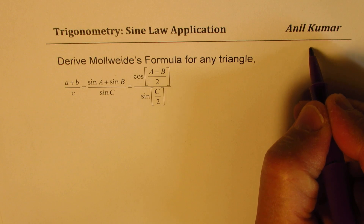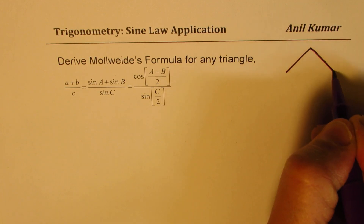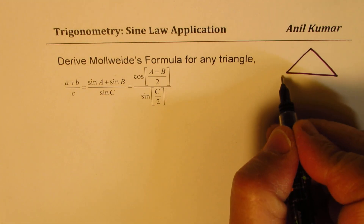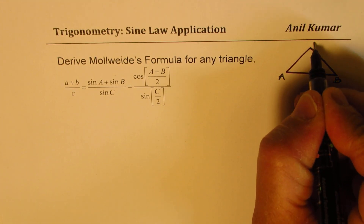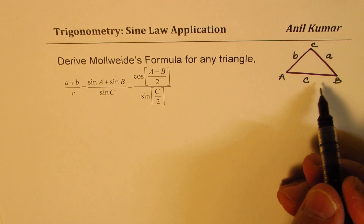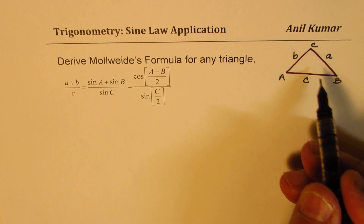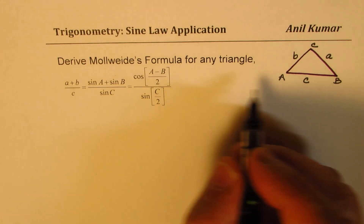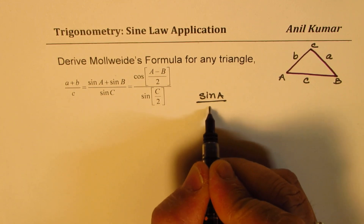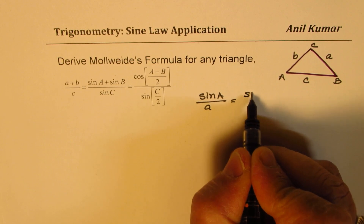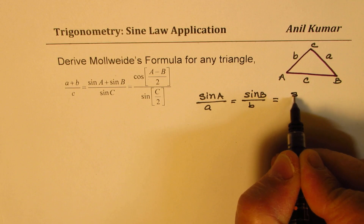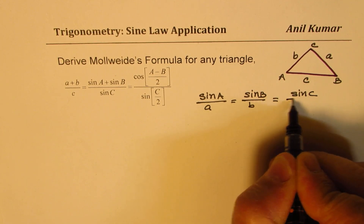We'll begin with triangle ABC, any general triangle. In this triangle, the sides will be lowercase a, b, c. You can apply the sine law in any triangle, so we can always write sin A / a = sin B / b = sin C / c, and that is always equal to a constant.